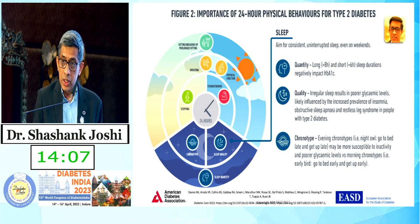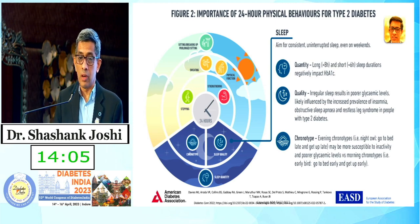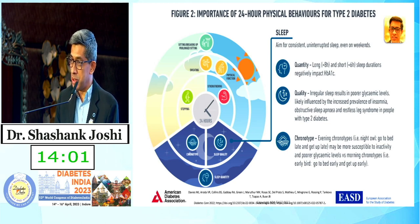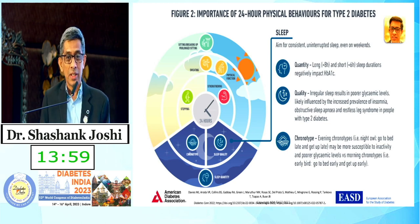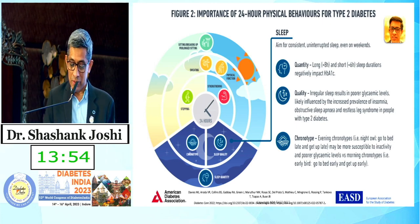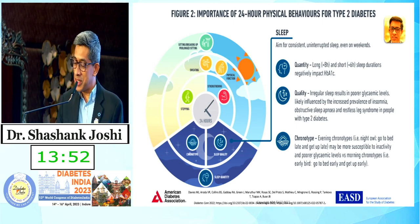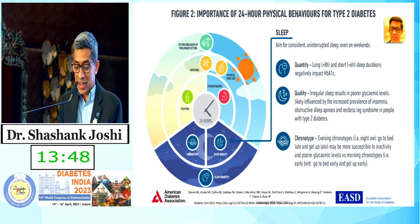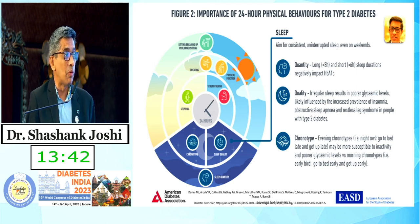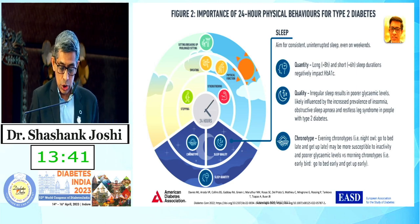Having an evening chronotype, which is very typical of Indian lifestyles like the Sarafa culture, is not really helpful. Attending events at 2:30 or 3:30 AM — or Bhasmarti at Ujjain Mahakal — might be more relevant metaphorically. The guidance recommends that an evening chronotype is not recommended and a morning chronotype might be more useful. But this needs evidence-based generation in our situation and scenario.